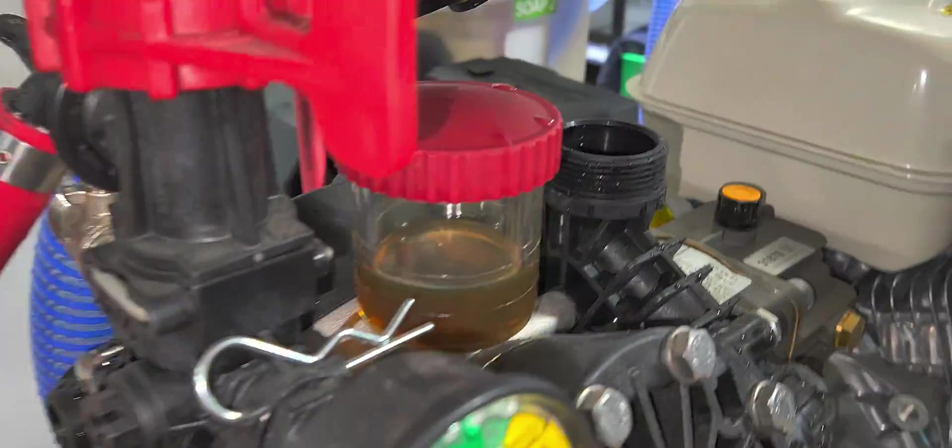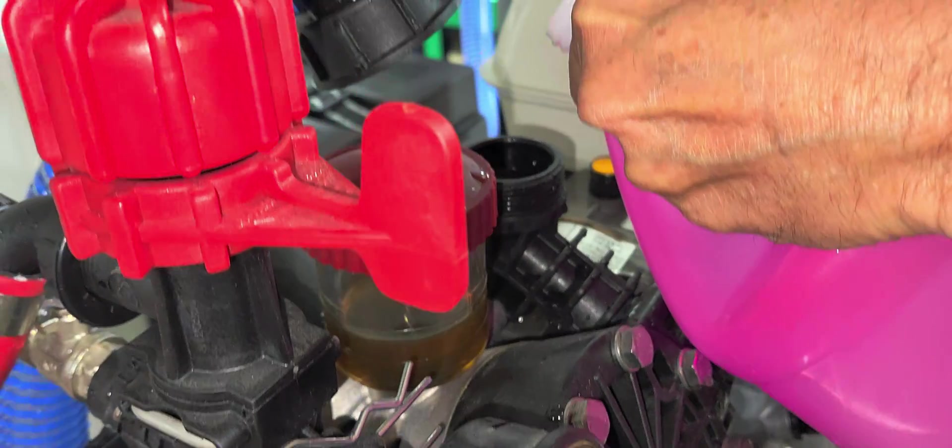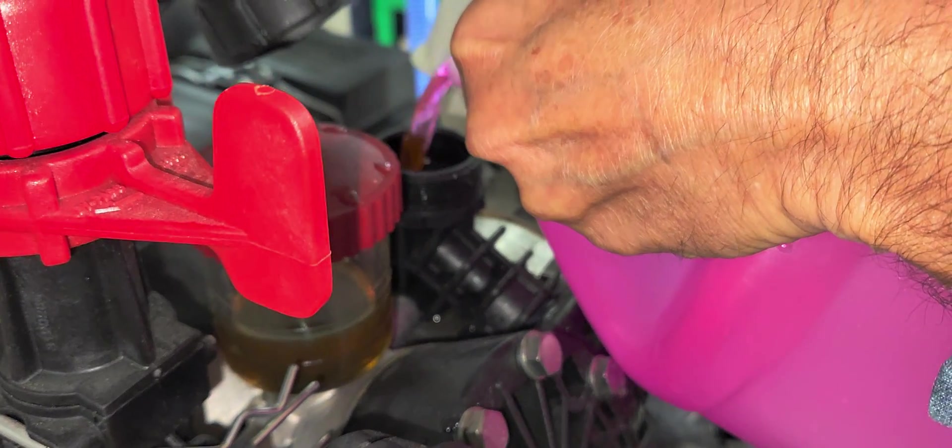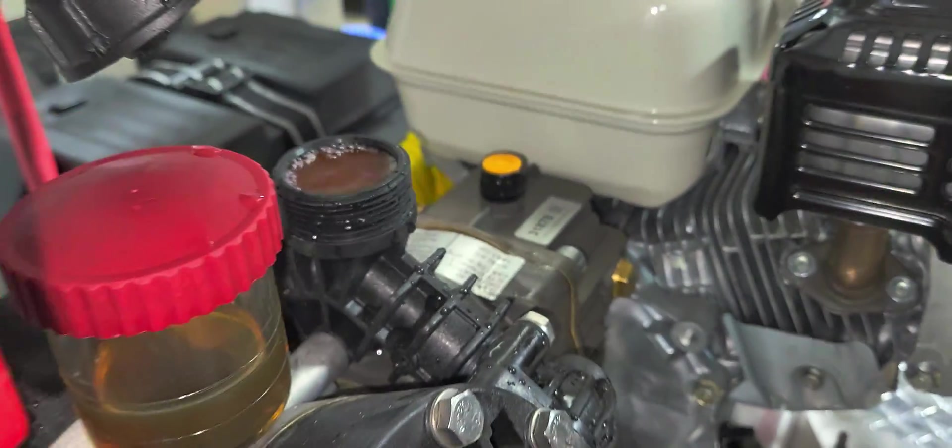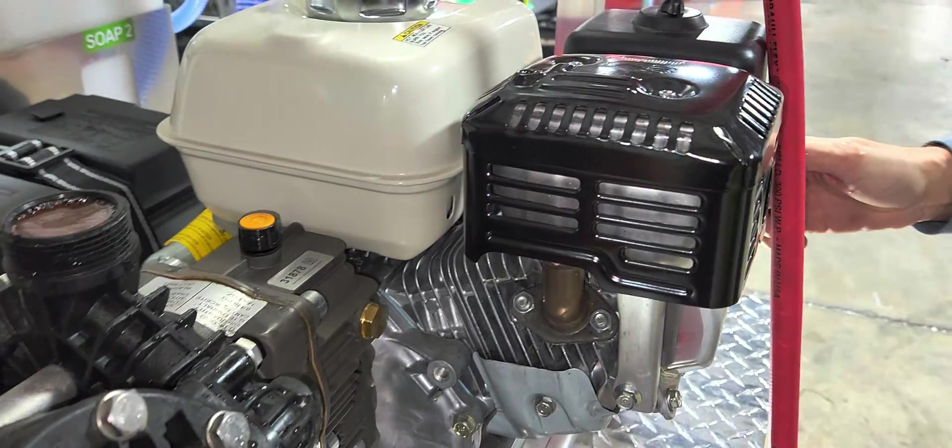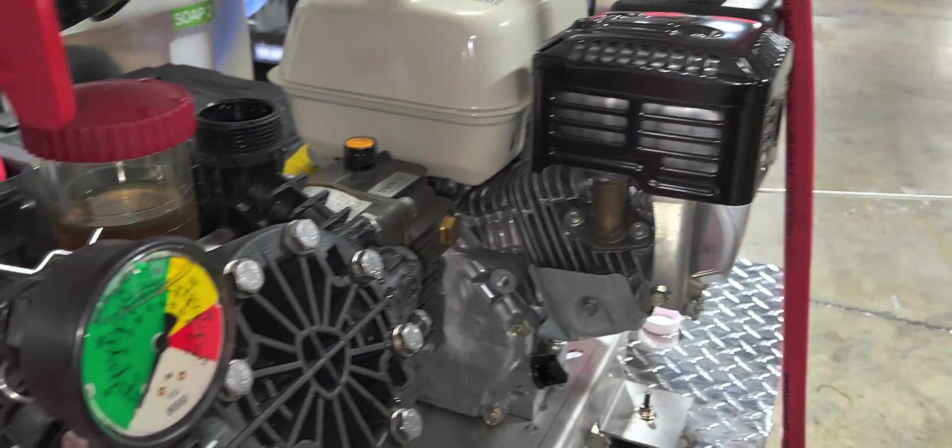You can also use windshield washer fluid. And you're going to pour it right in here until it's full. And then you pull your pull port slightly, and it's going to pull that winterizer into the pump.